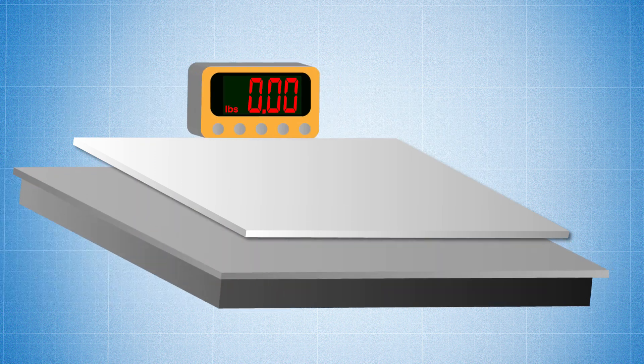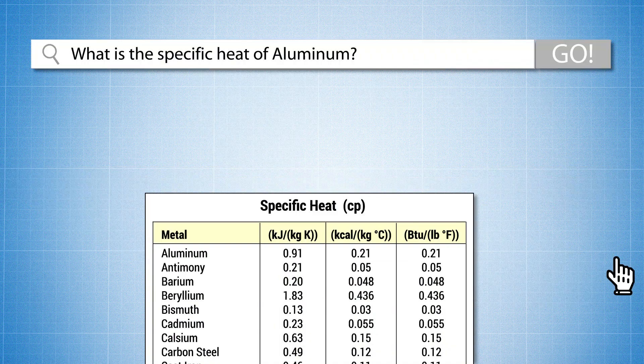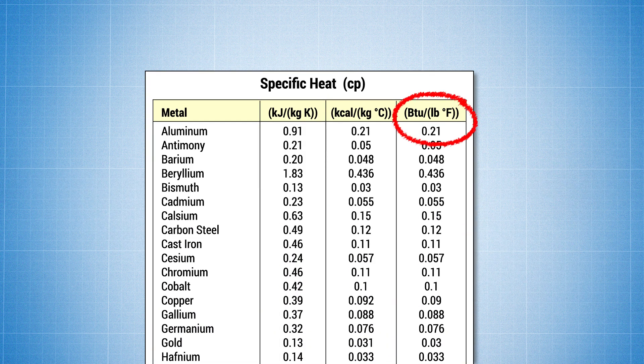First, we have to find out the weight of the aluminum plate. Let's say the weight is 5 pounds. Then we need to look up the specific heat of aluminum, which is 0.21 BTUs per pound per degree Fahrenheit.